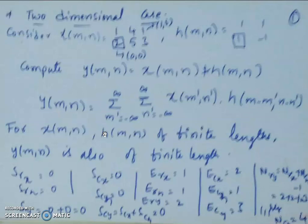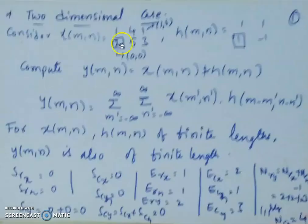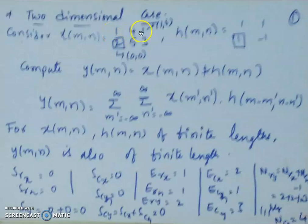So, let us consider x(m,n) equal to 1,4,1,2,5,3, where the zero origin is at 2. When I move up, the row index is going to increase; when I move towards the right, the column index is going to increase. So this gives us coordinates (0,0), (0,1), (0,2), (1,0), (1,1), and (1,2).